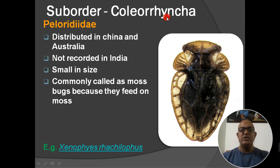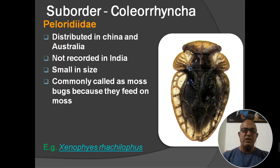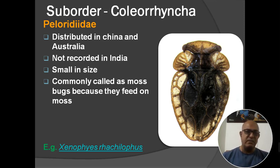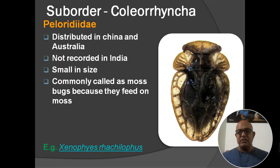First sub-order: Coleorrhyncha. First family: Peloridae. Salient features — distributed in China and Australia; not recorded in India. Small in size. Commonly called moss bugs because they feed on moss. Moss is a type of epiphyte — a type of plant — which these insects use as food. The main example is Xenophyes cascus. It is a very small-sized insect, but nowadays with macro lens camera facility, micro photography is possible.